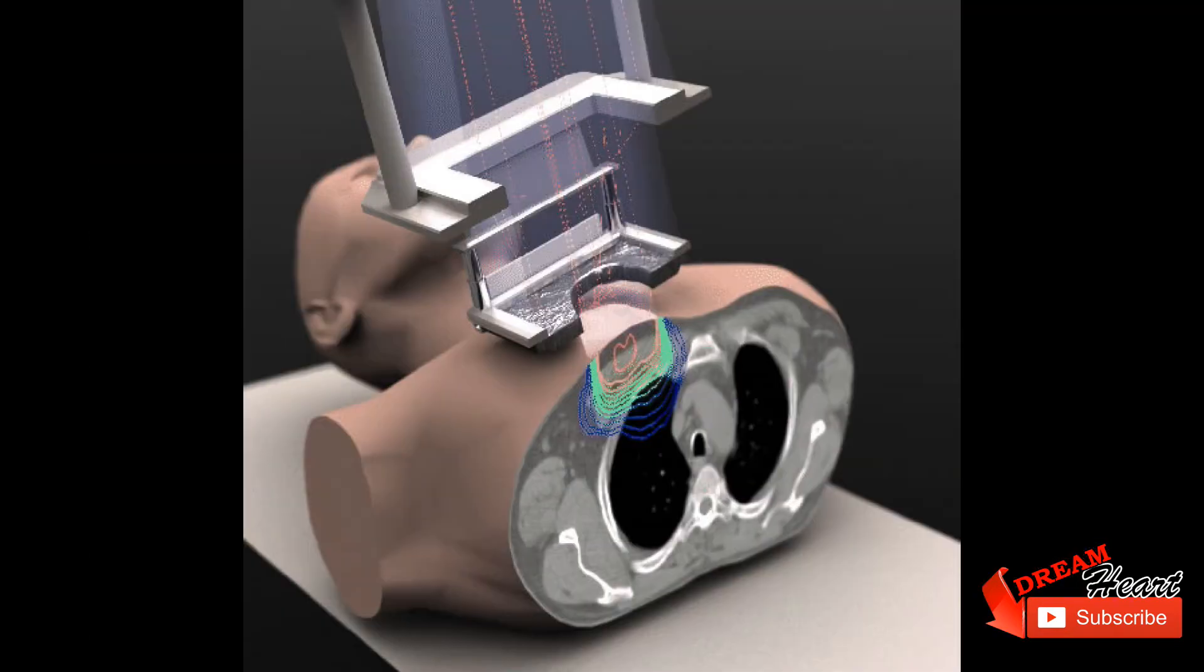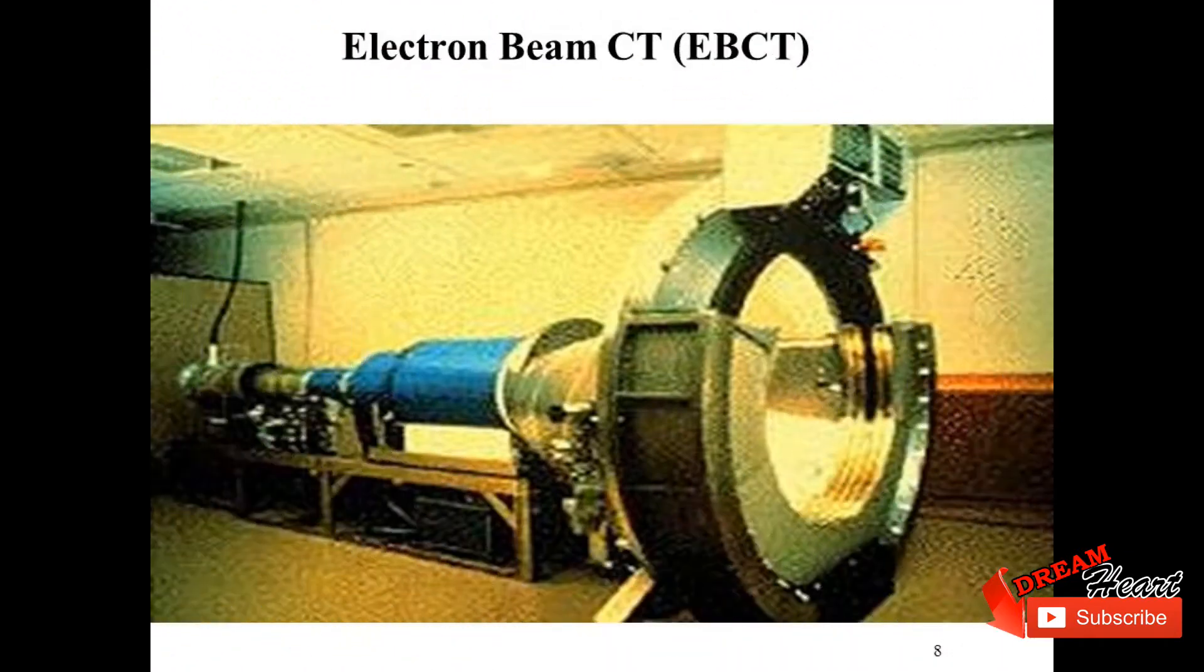The lack of moving parts allows very quick scanning with single slice, making the technique ideal for capturing images of the heart. EBCT has found particular use for assessment of coronary artery calcium, a means of predicting risk of coronary artery disease.